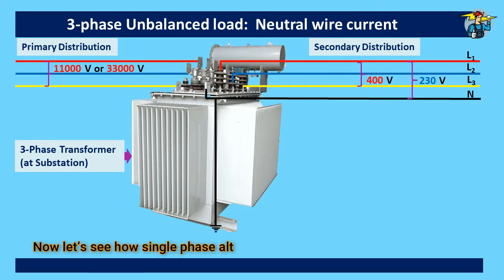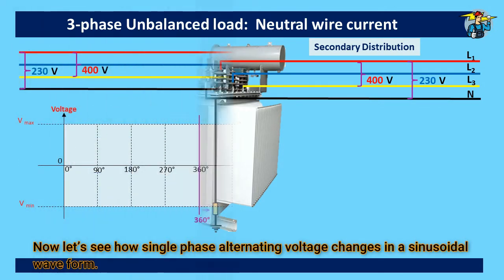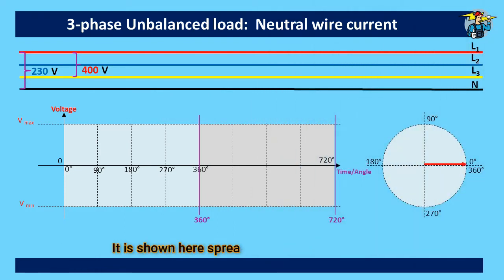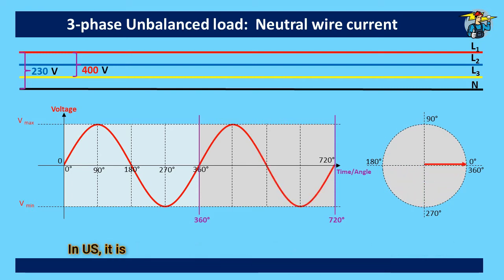Now let's see how single phase alternating voltage changes in a sinusoidal waveform. It is shown here spreading over two cycles. This voltage alternates very fast between its maximum and minimum values continuously with a speed of 50 cycles per second. In US, it is 60 cycles per second since frequency is 60 hertz in US.